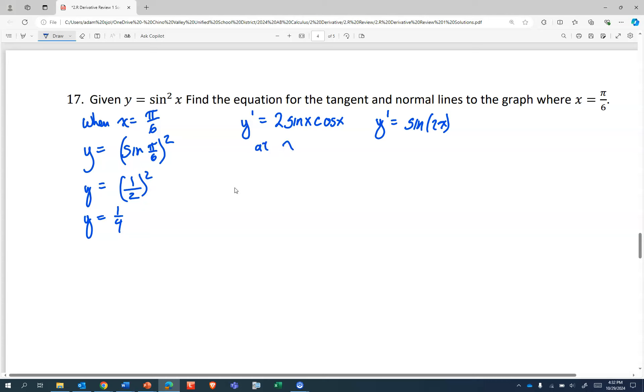I suppose that's another trigonometry thing you forgot, even though we reviewed that at the beginning of the year. So at π/6, y' equals 2 sin(π/6) cos(π/6). That's 2 times 1/2 times √3/2.